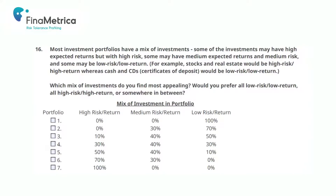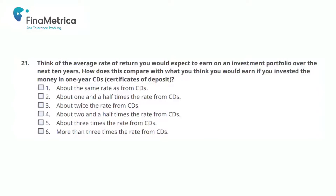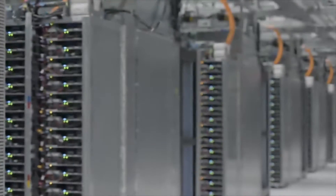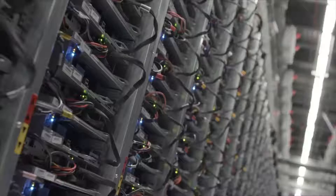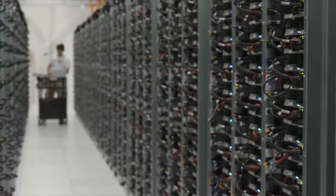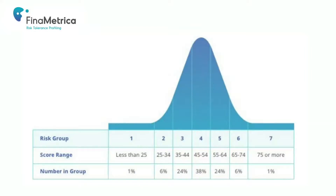Other questions include: Which mix of high, medium and low risk investments do you prefer? How much do you expect your investments to earn over the next 10 years compared with certificates of deposit? Using the answers to the 25 questions, the computers turn the answers into a numeric score out of 100. That number puts the person into one of seven risk groups that emerge from the risk tolerance bell curve. Risk tolerance perfectly shapes to the classic bell curve — men score a little higher and women a little lower, but as a total population the most people are around the middle, in group four, with scores between 45 and 54.